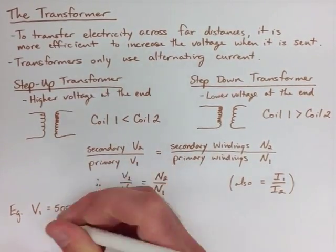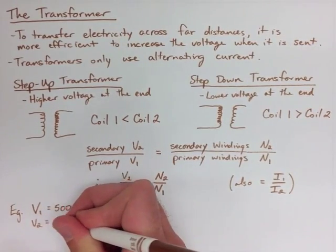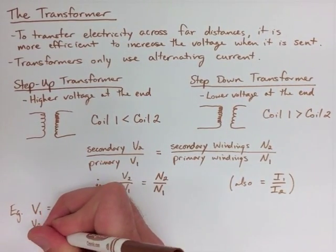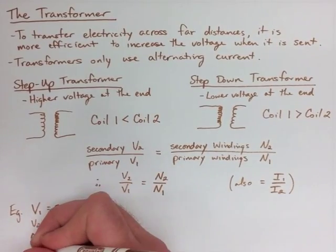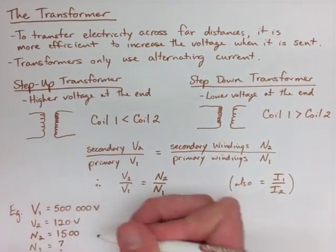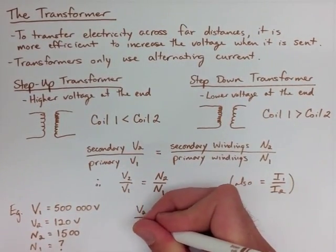Now looking at our example, we know that V1 is 500,000 volts because this is a step-down transformer, meaning that our high voltage has got to be first. V2 is then 120.